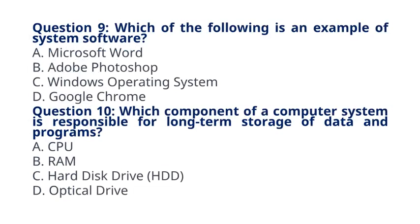Question 9: Which of the following is an example of system software? A. Microsoft Word, B. Adobe Photoshop, C. Windows operating system, D. Google Chrome. The correct answer to question 9 is option C: Windows operating system. Explanation: The Windows operating system is an example of system software that manages computer hardware and provides a platform for running application software.